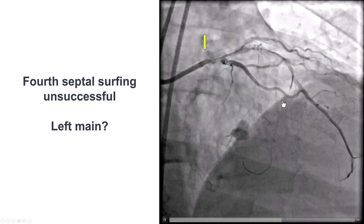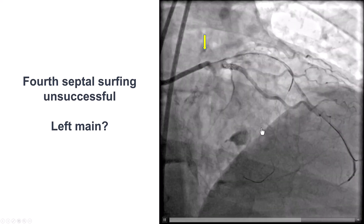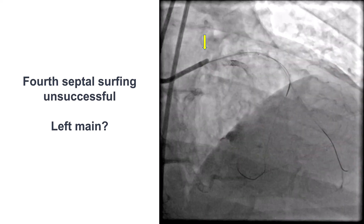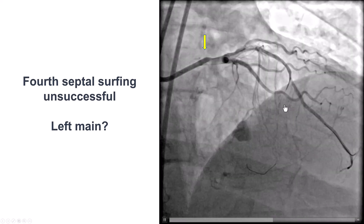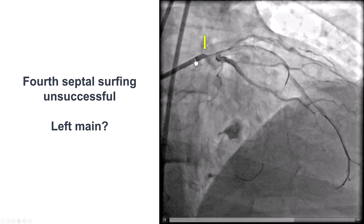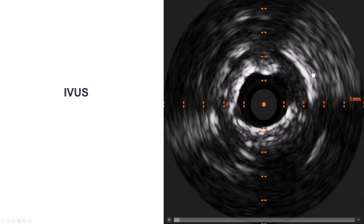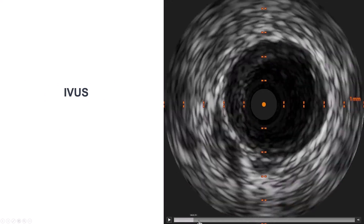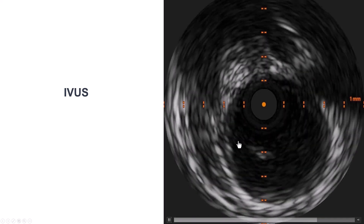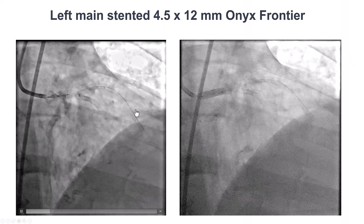We tried another septal crossing, but once again the wire did not make it all the way. One more thing we noticed — which was actually present in the previous film, but sometimes it's hard to realize when we're focusing so much on a specific portion of the angiogram — is that there was an area that looks suspicious in the left main. So we have essentially a flap. It looks like a left main dissection.